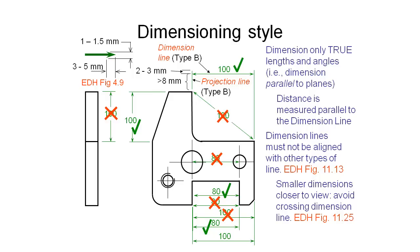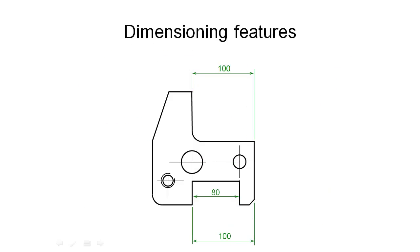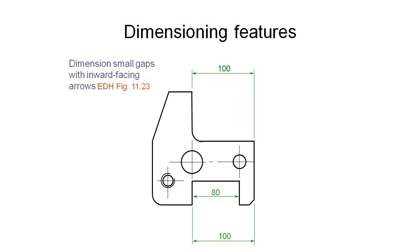Now let's look at how we dimension other features on this drawing. Sometimes we have small gaps where we can't fit arrowheads and numbers between our projection lines. In cases like this, it's acceptable to have the arrows pointing inwards toward each other with no dimension line between them, and to place the unit or number of the dimension on the outside.